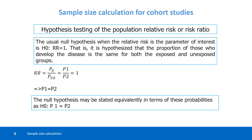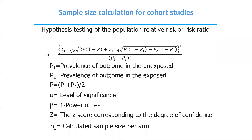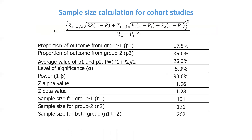The null hypothesis may be expressed in terms of these probabilities. Based on the null hypothesis, the sample size formula is: n = [z_alpha × sqrt(2p̄(1−p̄)) + z_beta × sqrt(p1(1−p1) + p2(1−p2))]² / (p1 − p2)², where p1 is the prevalence of outcome in the unexposed group, p2 is the prevalence of outcome in the exposed group, and p̄ is the arithmetic mean of p1 and p2. Alpha is the level of significance, beta is 1 minus power, and z values are the corresponding z-scores. n1 is the calculated sample size per arm. If we put the values into this formula, we get a sample size of 262.